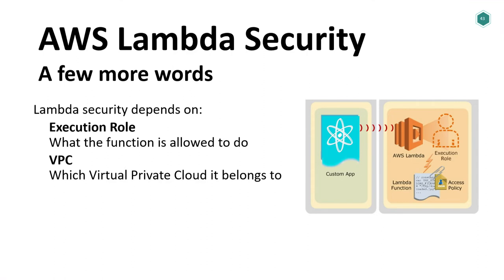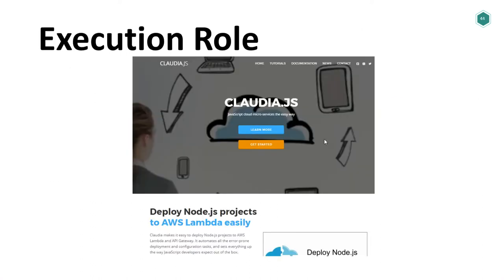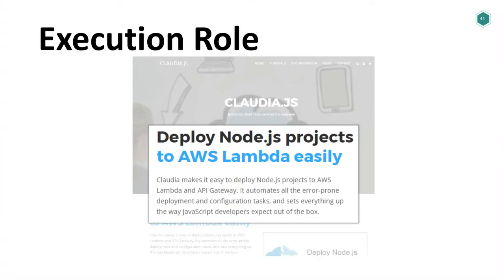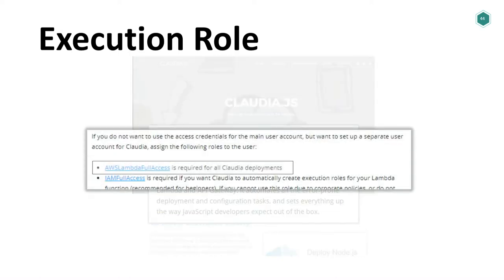Let's talk more about Lambda security before we finish. Lambda security depends on two main parameters: execution role and VPC. The execution role defines what the function is allowed to do — you can get really fine-grained with permissions if you know how and want to. VPC — Virtual Private Cloud — defines which network the Lambda function belongs to and can communicate with. How many of you know Claudia.js? It's a pretty common solution for deploying Node.js projects to AWS.